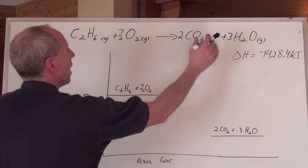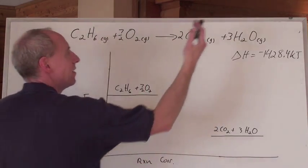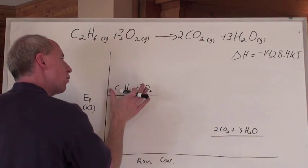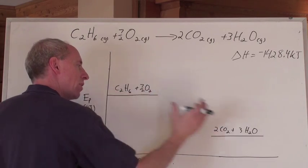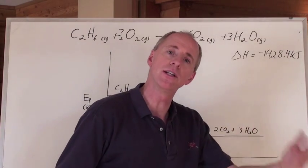When you take this reaction and say, I want to graphically represent it, it's an exothermic reaction, so the reactants are going to end up with more potential energy than the products do because energy is going to be released.